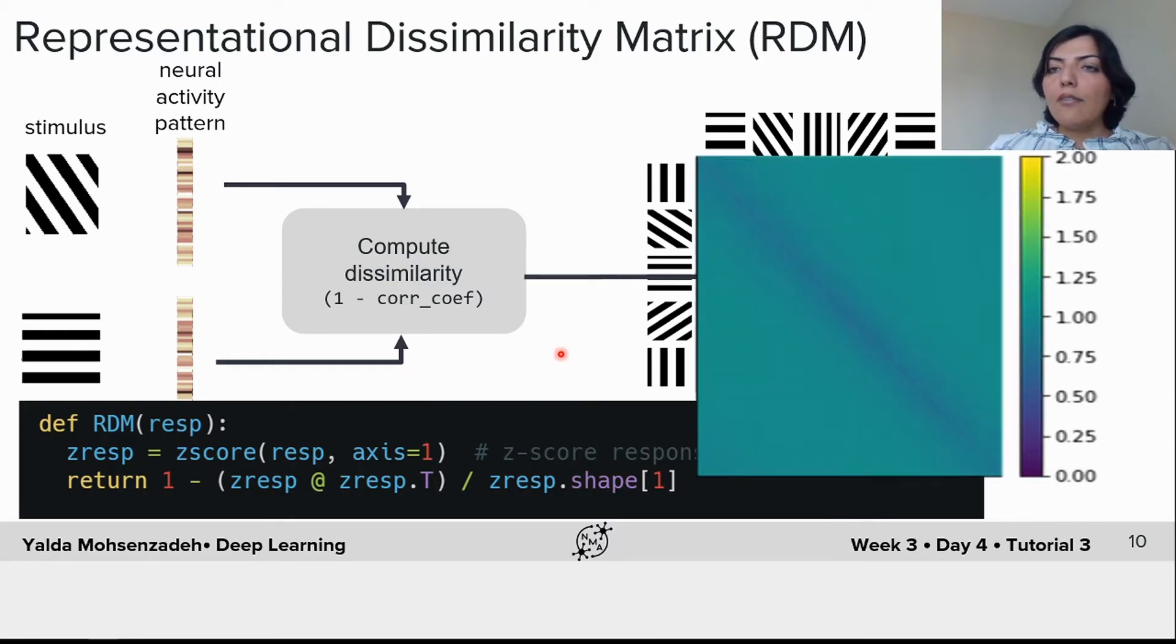This will give you, for this orientation discrimination task, a 180 by 180 matrix RDM, and this matrix is a square shape, symmetric, and its diagonal is zero.